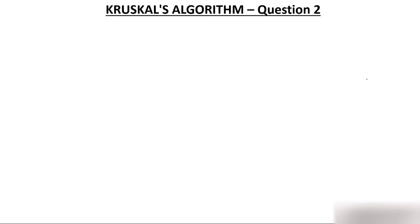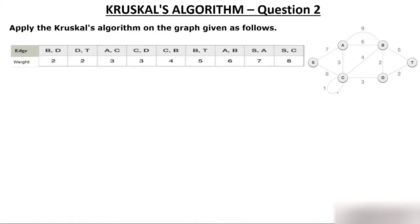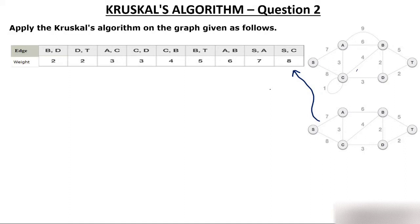Let's solve one more question. Apply Kruskal's algorithm on the given graph. Note that a spanning tree does not contain a cycle or a loop. In the given graph there is a cycle and a loop, so before solving, exclude the parallel edge and loop. After removing them, arrange all remaining edges in increasing order of weight to form the sorted table.